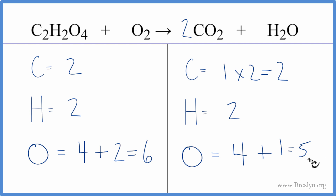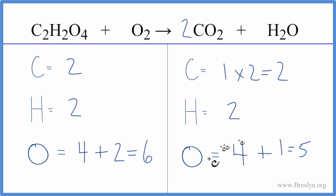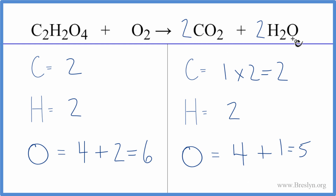So we have a bit of a problem here — we have five on the product side and six on the reactant side. Everything else is the same, so we do need to balance these oxygens. If we put a two in front of the H2O, that would mean two times two is four, plus two times one is six.